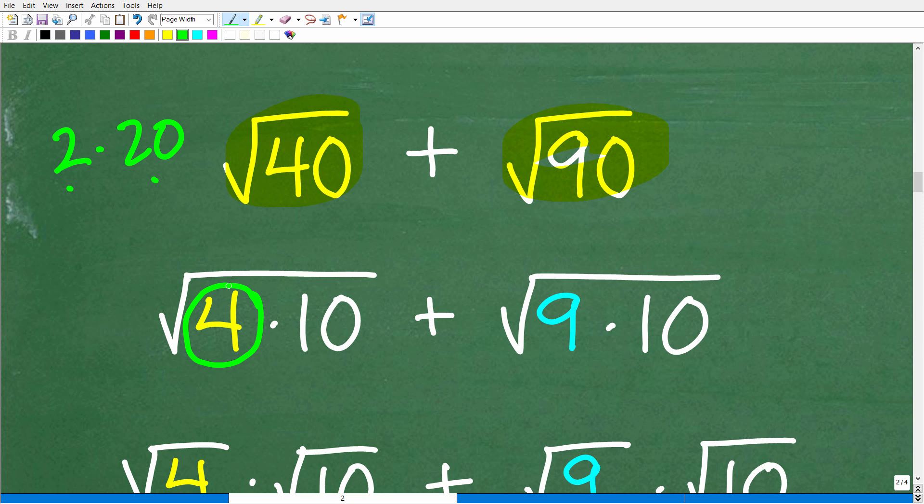Now likewise, we have the square root of 90, so we can think of that as the square root of 9 times 10 because 9 is a perfect square. Now hopefully this is kind of obvious. I made this question pretty easy because this is kind of a basic level, an introductory level problem. But let's go ahead and finish this up now.